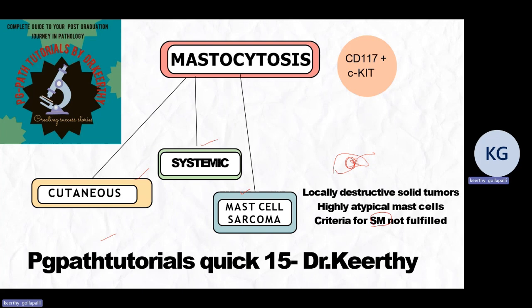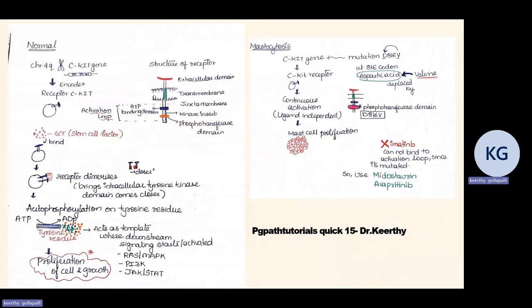Before going into the classification, let's cover the pathogenesis of mastocytosis. The C-kit gene is located on chromosome 4. This gene codes for proteins that form the C-kit receptor, which has an extracellular domain, transmembrane domain, and intracellular domain. Within the intracellular domain, there is an ATP binding domain and phosphoryltransferase domain — this constitutes the activation loop.